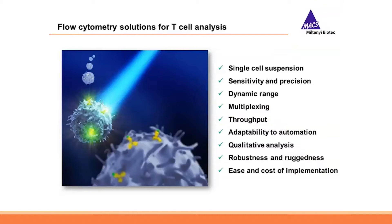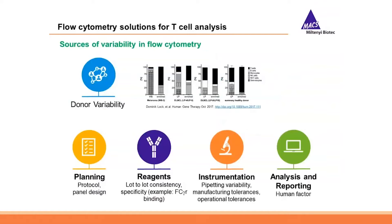Although flow cytometry has many advantages, this technology is also criticized because of variability in datasets. Variability in flow cytometry data can be affected by many different factors. Some of these include variability of the donor, the tissue or starting material you are working with, and factors involving experimental setup, such as not having the right protocol, the reagent of your choice, the instrumentation setup, or variability introduced by human factors when analyzing or reporting the data.